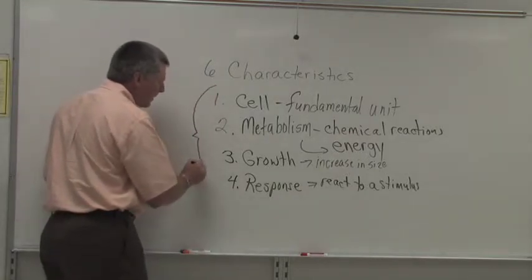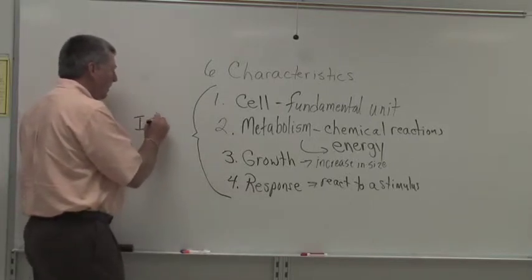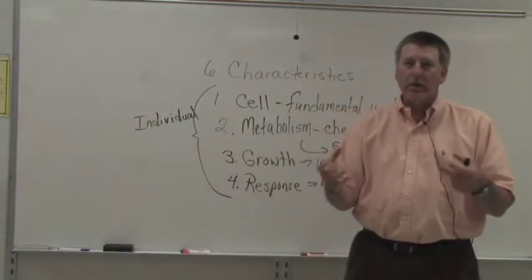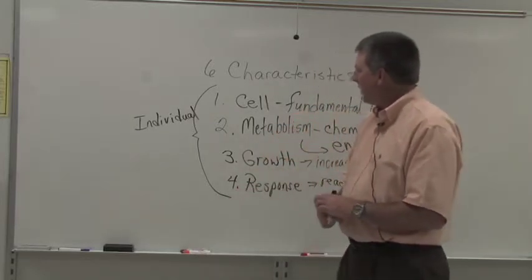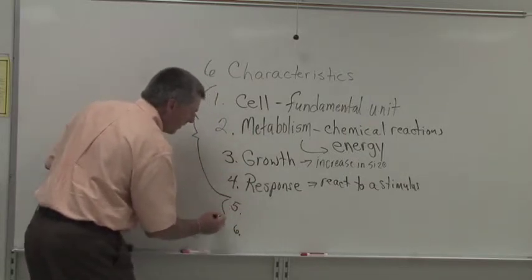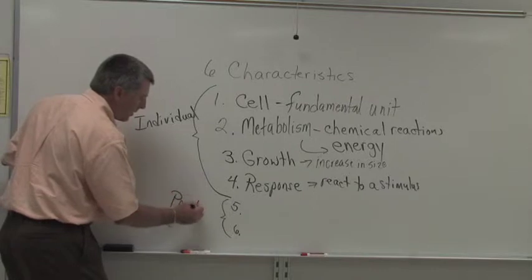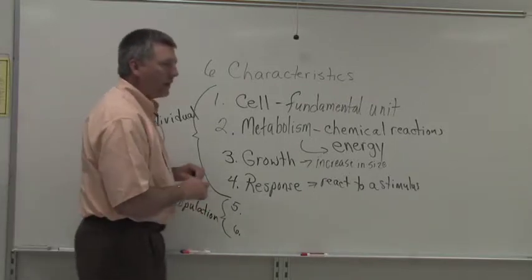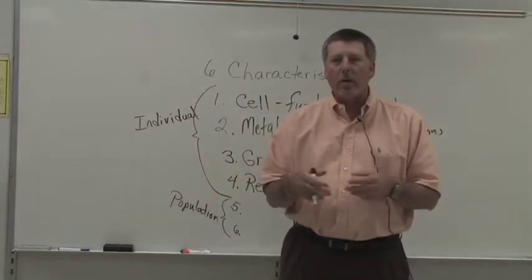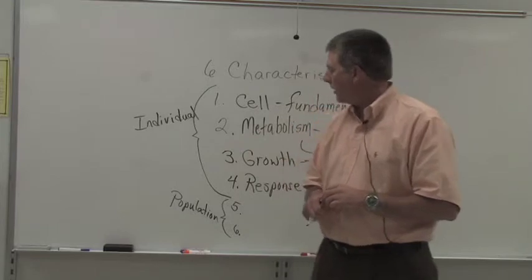Now, these four characteristics are characteristics of life that we think about on the individual level — meaning an individual human being, an individual dog, an individual paramecium. But the last two characteristics of life are characteristics that exist on the population level, and the population is defined as a group of similar organisms in a defined area — for example, the population of flathead catfish in the Yadkin River.